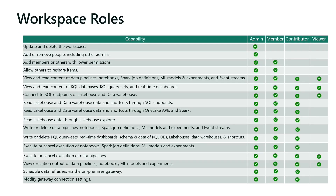Here is a concise comparison of the different levels of roles available in Fabric. The Admin role has the highest level of control — it has full access to all workspace capabilities. The Member role has a lot of privileges, but it cannot manage workspace settings or add users as an Admin. However, it can add users as Member, Contributor, or Viewer.